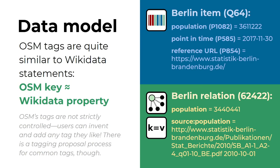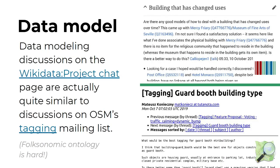Another thing is that OpenStreetMap's tags are not strictly controlled, unlike Wikidata where you have to have an approval process before properties are created. Here, OpenStreetMap mappers can invent and add any tags that they like. However, there is a tagging proposal process in order to propose common tags that will be used by mappers all over the world.